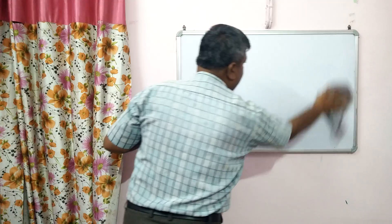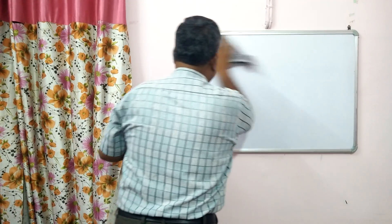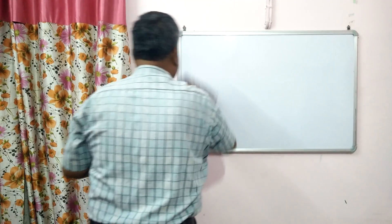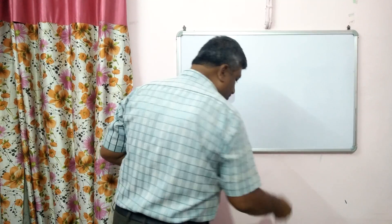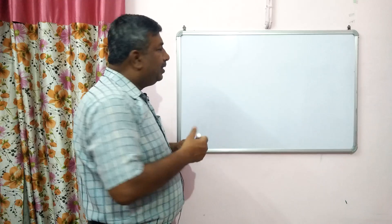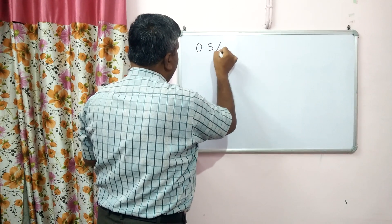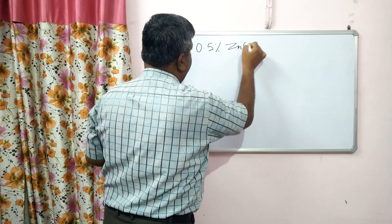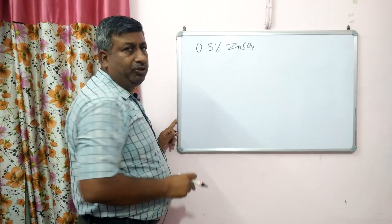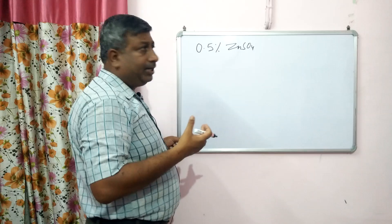For foliar application, we mix zinc sulphate and apply it on the crop. Whether it is monohydrate or heptahydrate, it does not matter to a great extent for foliar spray. The important thing is that we apply a 0.5% zinc sulphate solution, and this is the maximum limit.